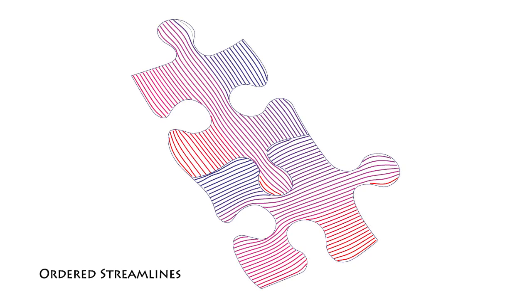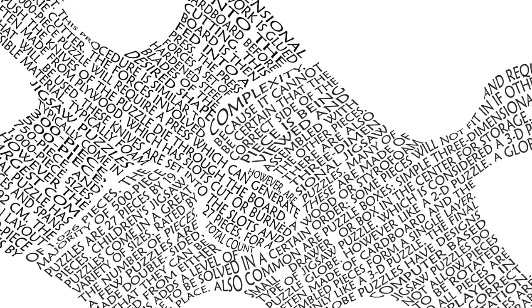Next, we trace lines inside each region based on the text amount or user preferred size, and compute a consistent ordering of the lines. Lastly, we use the streamlines to lay out the text, generating the final micrography image.